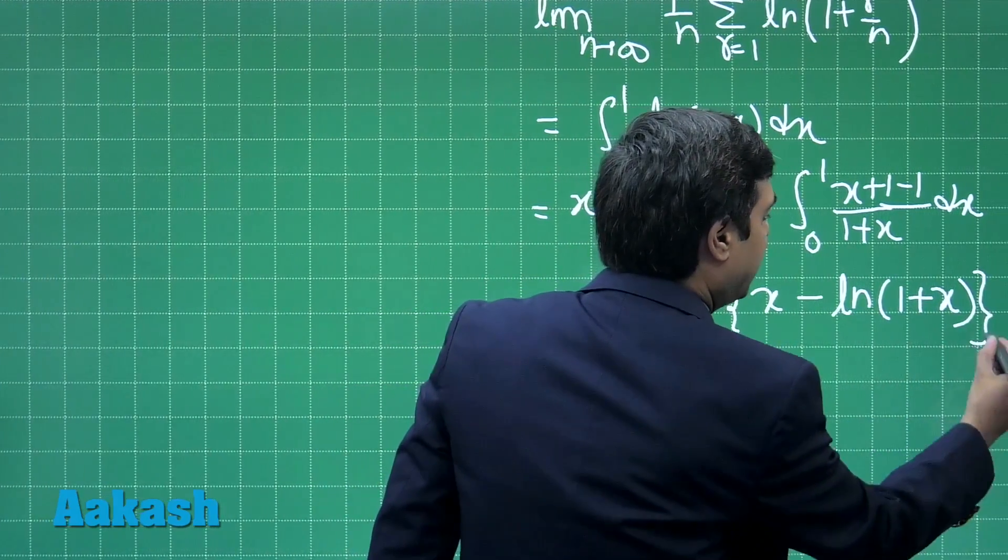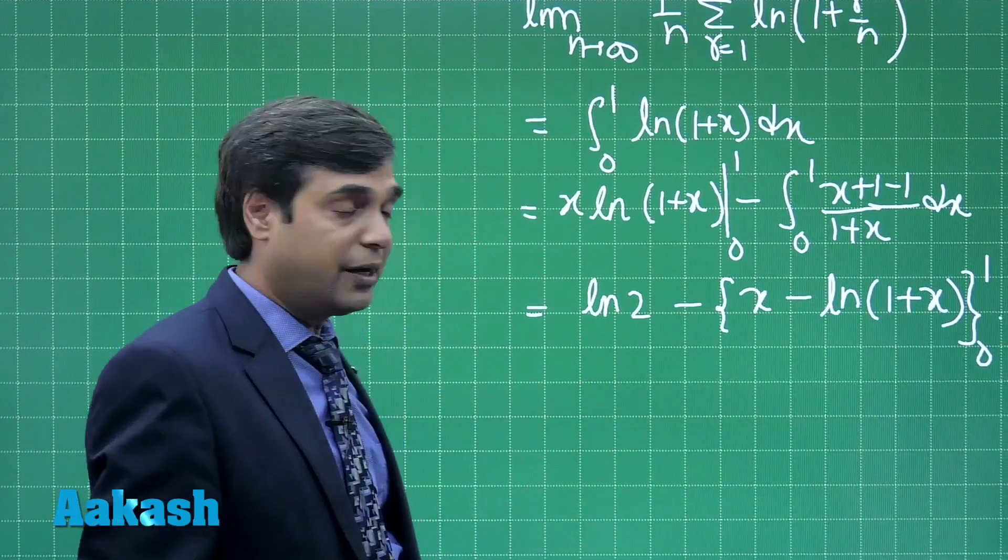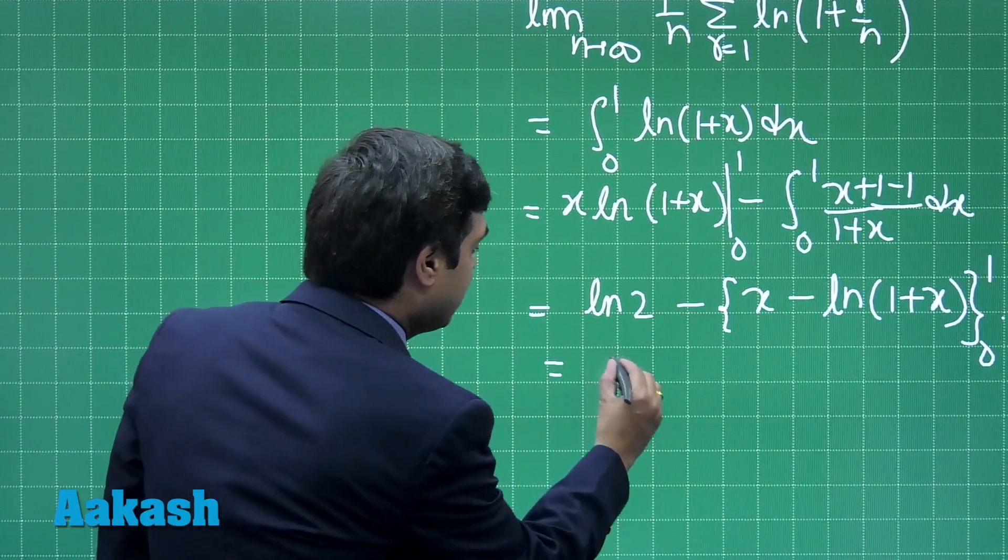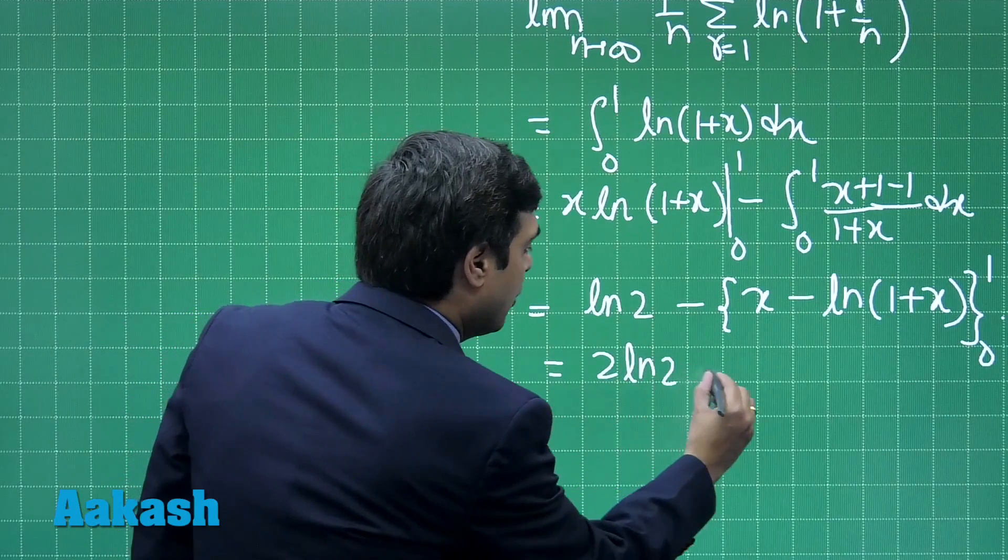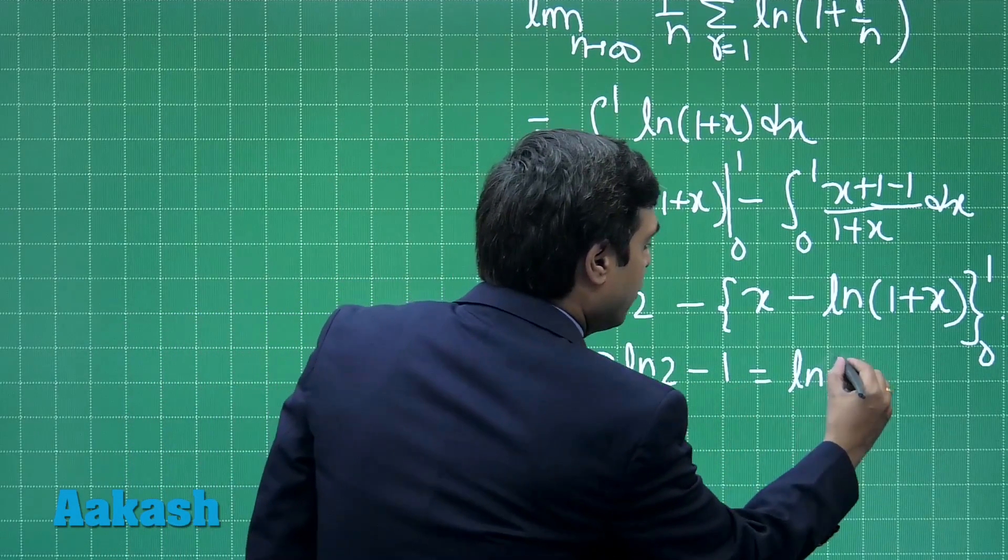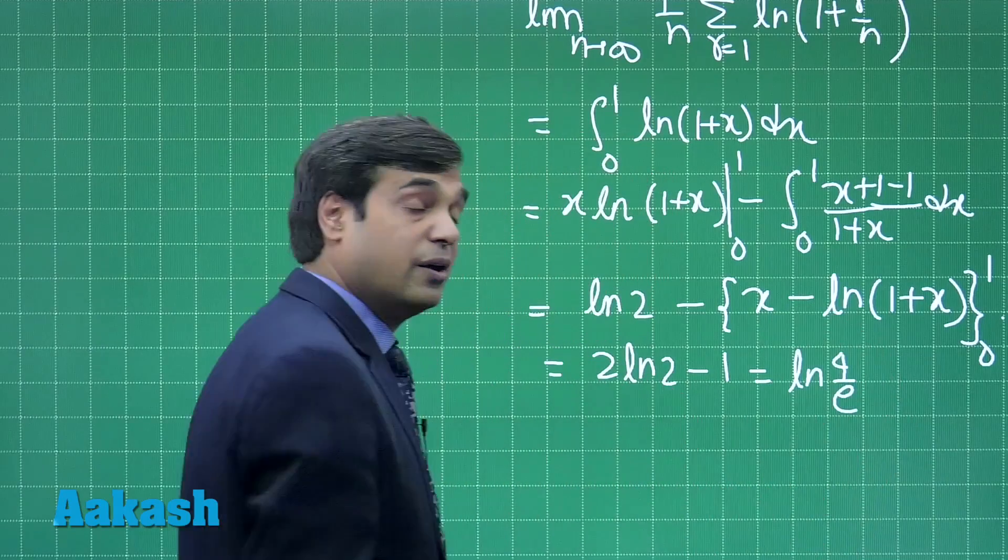Under the limit 0 to 1, correct. Apply limit to get 2 log 2 minus 1, or log 4 by e.